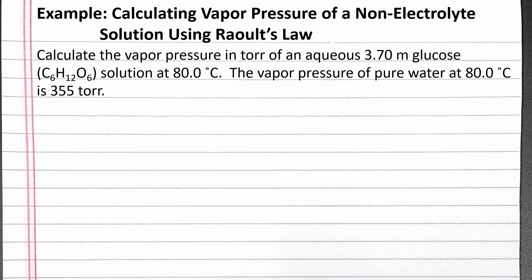The vapor pressure of pure water at 80.0 degrees Celsius is 355 torr. We can start with Raoult's Law, which says the vapor pressure of a solution equals the mole fraction of the solvent times the vapor pressure of the pure solvent.